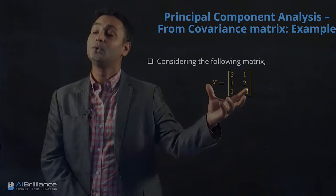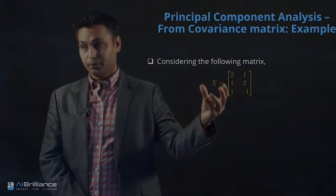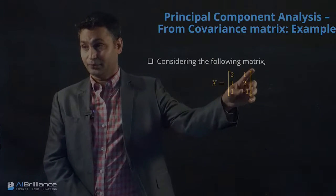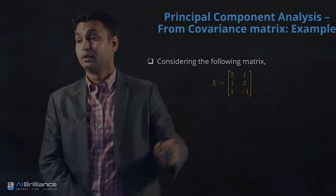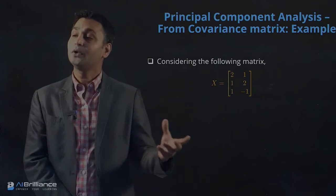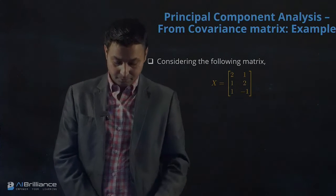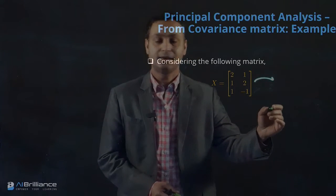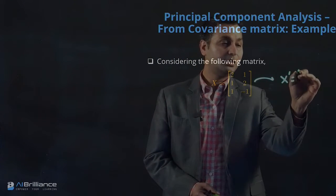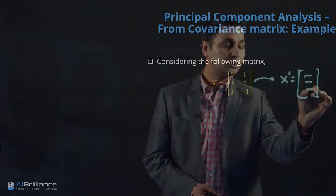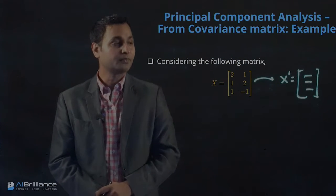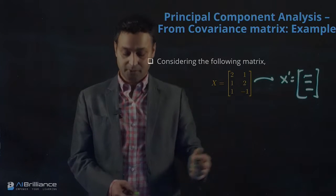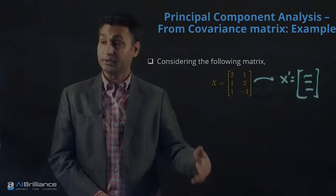We will use that information to do the principal component analysis and dimensionality reduction. If you look at this data, there are three data points and it has two dimensions — X1 and X2. What we want to do is possibly represent that by one single dimension, transforming this so that we don't need two dimensions — we just need one column and three entries corresponding to three data points. This is the dimensionality reduction we want to do.